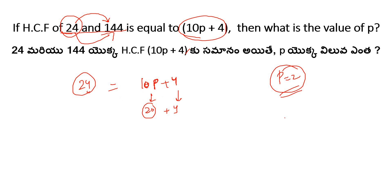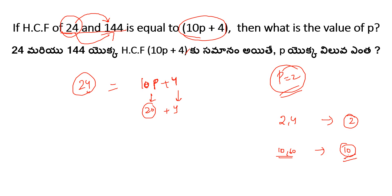HCF is the highest common factor. Verifying: if you choose 2 to 40 or 20, HCF conditions hold. The answer is confirmed as P equals 2.